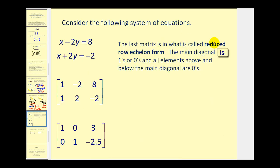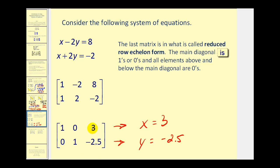Now let's look at what's called reduced row echelon form. If we write a system as an augmented matrix and transform it into reduced row echelon form, this makes it even easier to solve — the first row directly tells us x equals 3, and the second row tells us y equals negative 2.5. This form is called reduced row echelon form because the main diagonal consists of 1s or 0s, and every other element both below and above the main diagonal is 0.